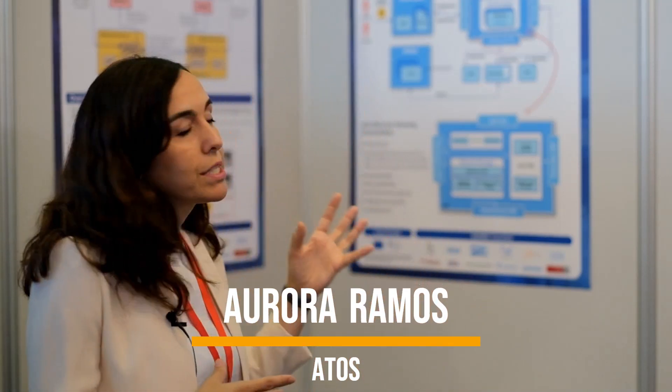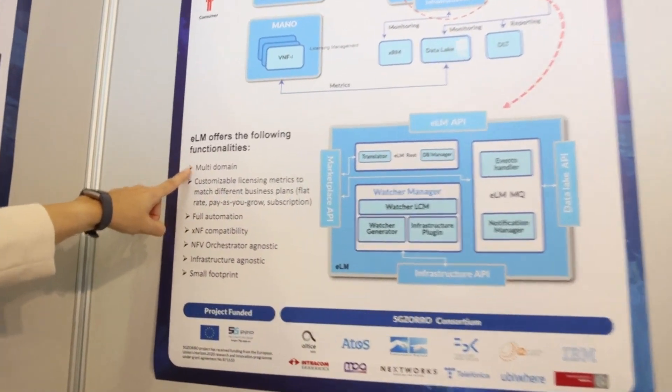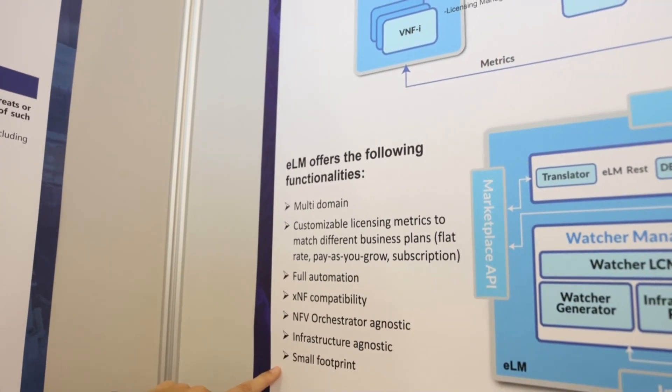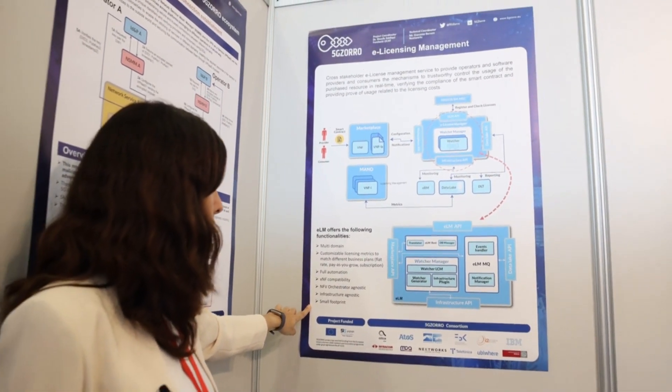In the figure at the top, we have how the e-license manager interacts with other components in the FAGI MANO system. On the left, we see that the software provider and the stakeholders acquiring that product will be creating a smart contract based on DLT technology. A VNF and the associated licensing policies will be stored in the FAGI marketplace. The marketplace will be notifying the e-license manager when a new VNF is coming, and the e-licensing manager will be creating what we have called a watcher — a specific monitoring process associated with the VNF and its licensing policies. At instantiation time, the VNF will be about to start and the watcher will be checking if the VNF is in alignment with the licensing policies.